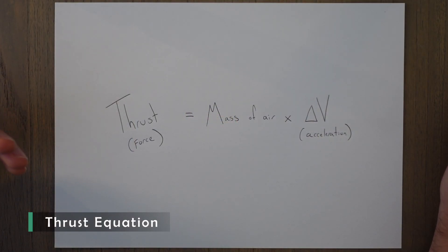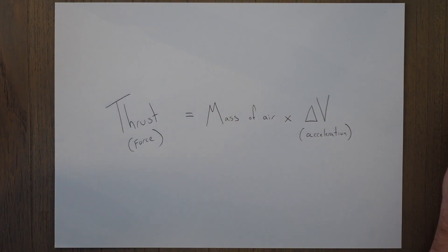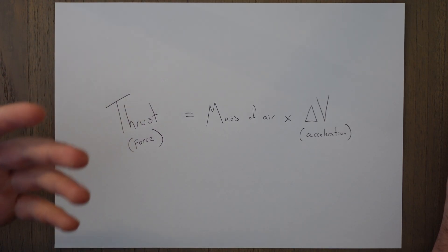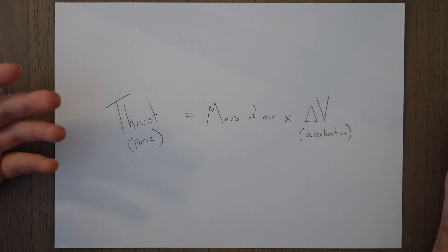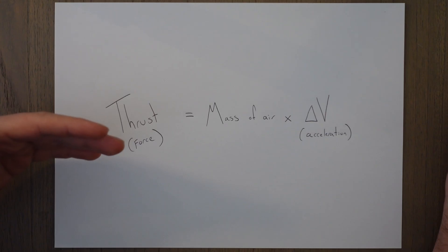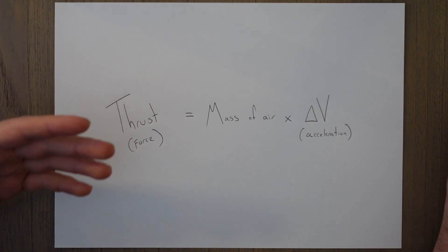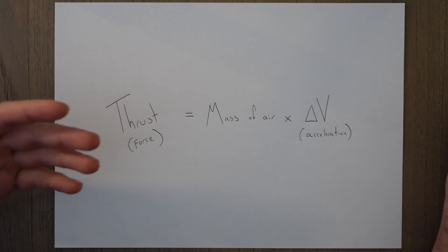Jet engines work because of Newton's third law — every action has an equal and opposite reaction force — and also Newton's second law: force equals mass times acceleration. So what we do is we send air out of the back of the engine really fast, and the equal and opposite reaction force pushes the engine and our aircraft through the air.